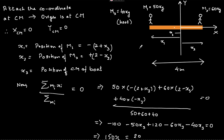In this problem, there are two people standing at the two extremes of a boat on the surface of a river or pond. The boat has a mass of 40 kg, person one is 50 kg, and person two is 60 kg. The question is: they come together at the center of the boat — how much will the boat shift or move?